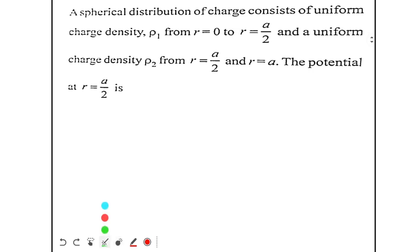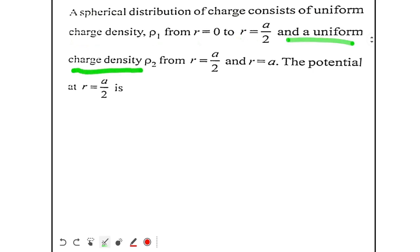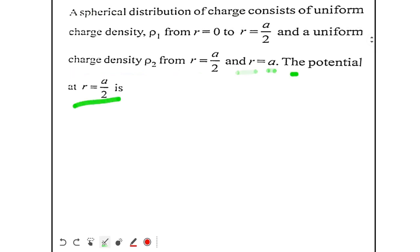A spherical distribution of charge consists of uniform density ρ1 from r = 0 to r = a/2, and a uniform charge density ρ2 from r = a/2 to r = a. The potential at r = a/2 is what?